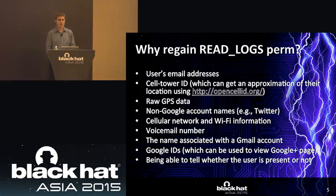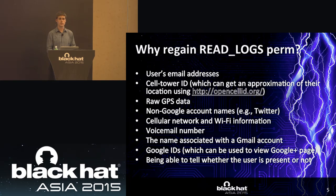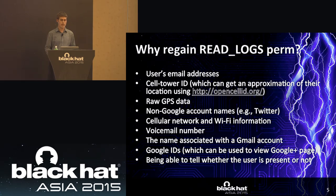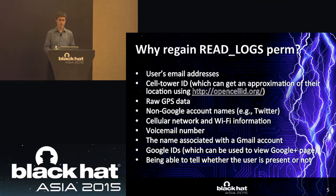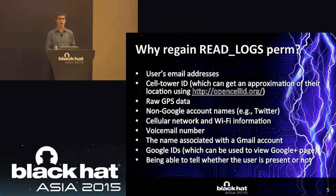Why try to regain the read logs permission? It's for the same reason they took it away — the private data. These are some of the items I've noticed showing up in the Android log: the user's email address, the cell tower ID. Each log entry has a timestamp so you can track what the user is doing. With the cell tower ID, you can access the free and open database to find the exact latitude and longitude of that cell tower, and if the user is moving you can see the different cell towers they connect to during handoff. There's also raw GPS data from the satellites, which you can process to get the exact coordinates of the user.